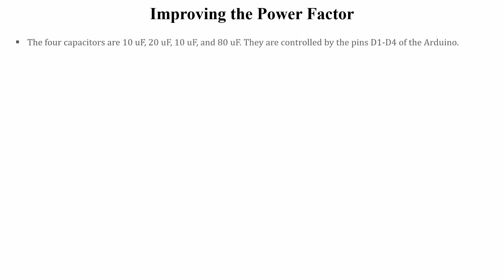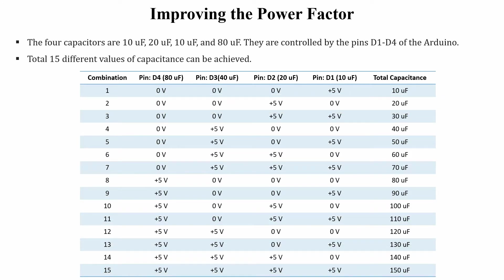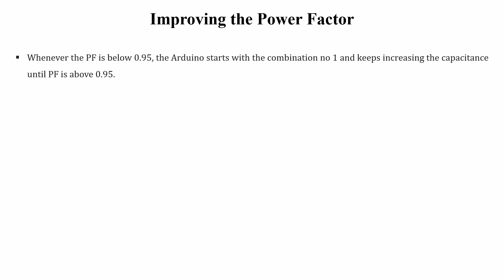The corresponding capacitor gets disconnected when an Arduino pin has zero voltage. The four capacitors have values of 10, 20, 40, and 80 microfarads. Using these four capacitors, 15 different capacitance values can be achieved. A table shows those combinations and the voltages to be given to pins D1 to D4 to achieve a specific capacitance — ranging from 10 to 150 microfarads in steps of 10 microfarads. The Arduino monitors the power factor and whenever it falls below 0.95, it activates combination one, checks again, and if still below 0.95, moves to combination two, continuing until the power factor rises above 0.95.